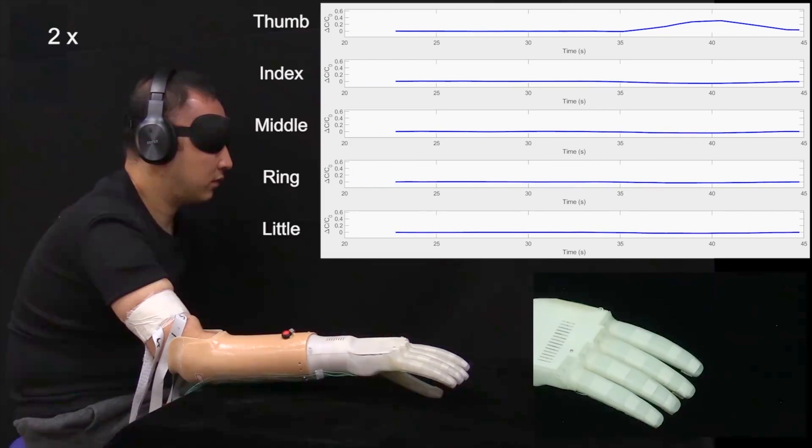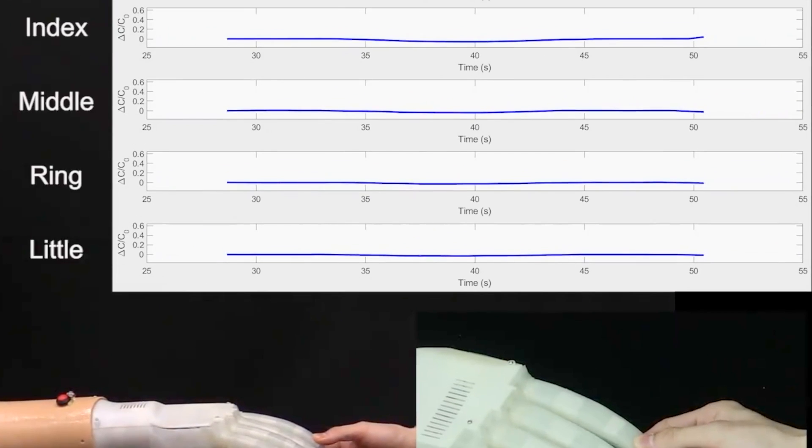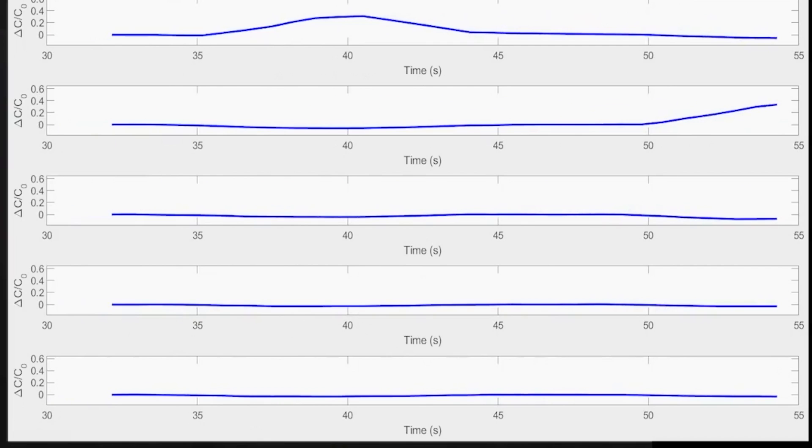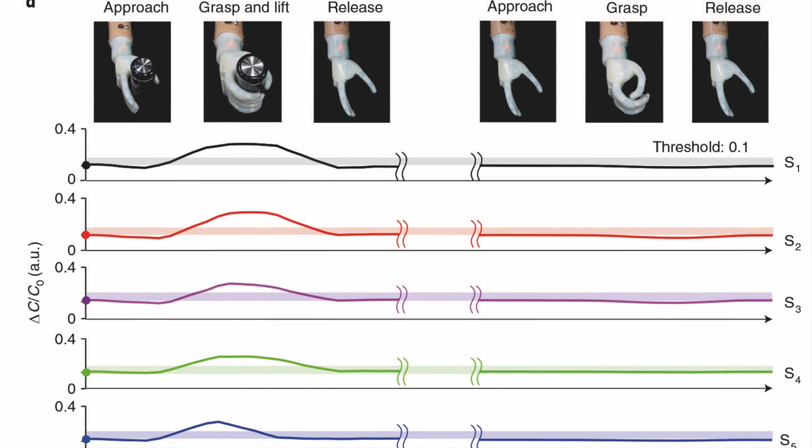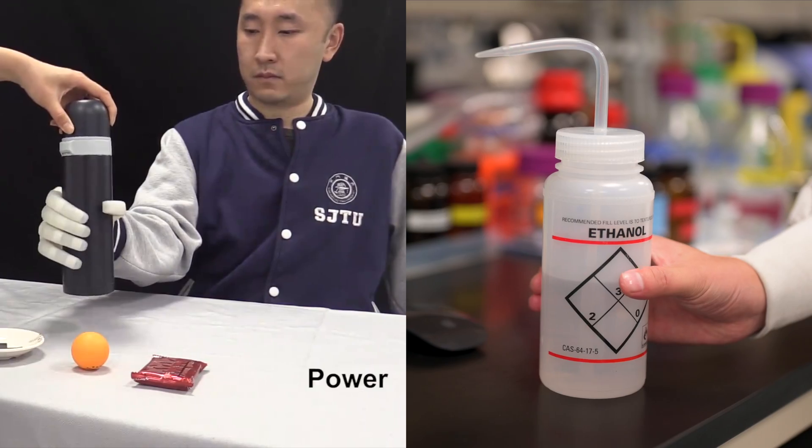Sensors are fitted where the prosthetic attaches to the user's limb to measure electrical signals generated by motor neurons that control muscle. Then an algorithm decodes the muscle signals and relates them to common grasp types.